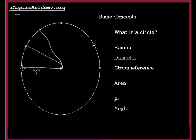Each of these lines are called radius. What is the radius? Radius is the distance from the point on the circumference to the center.